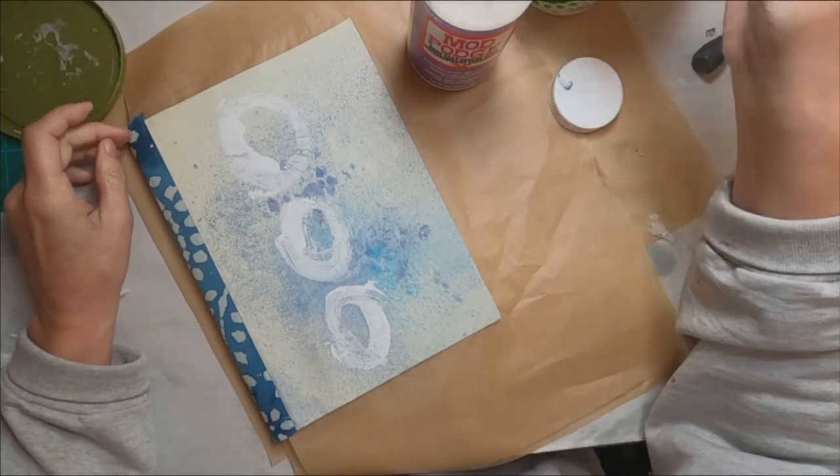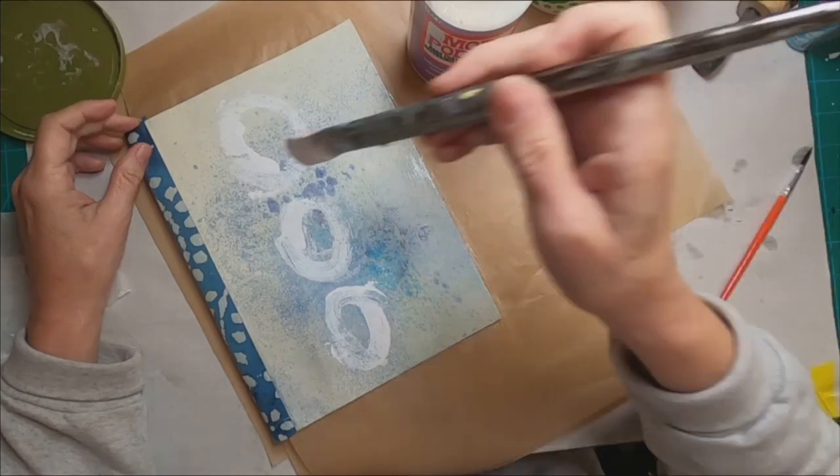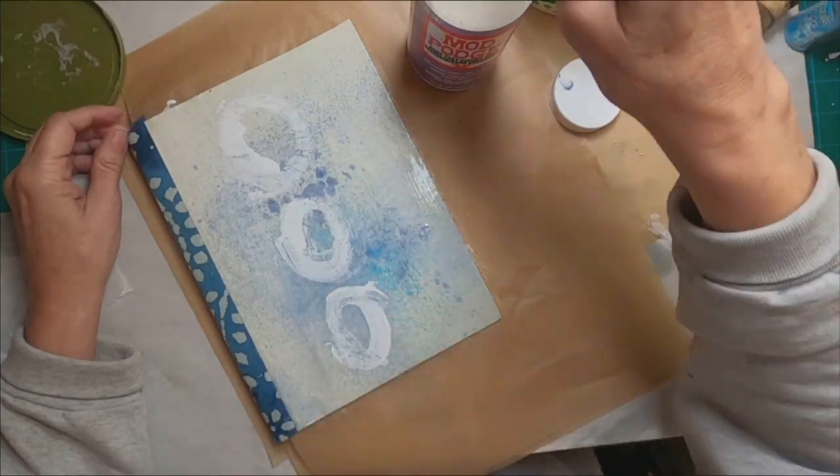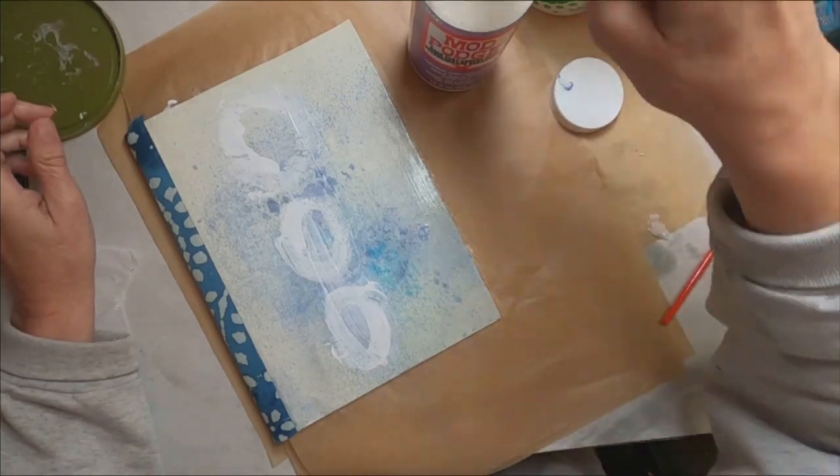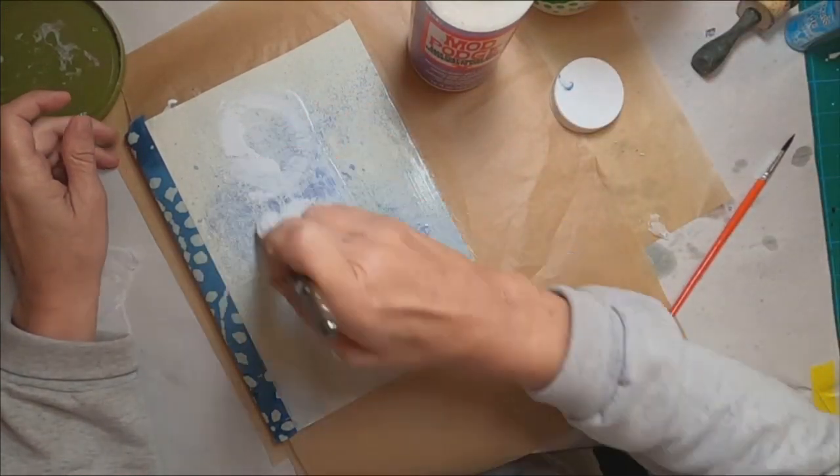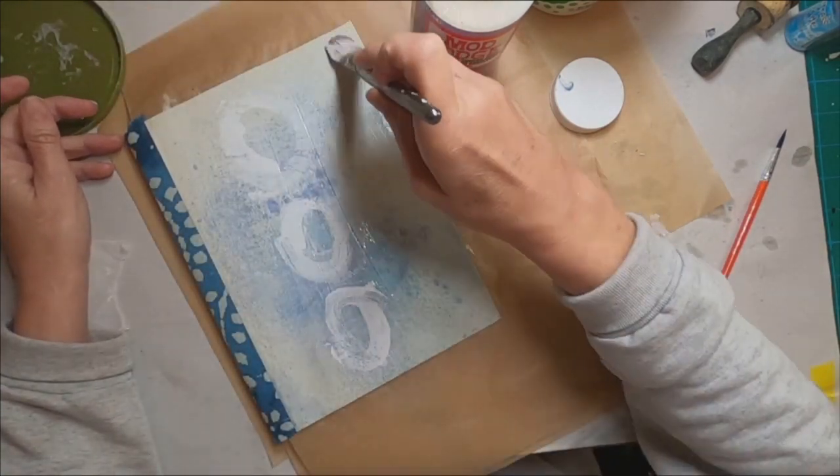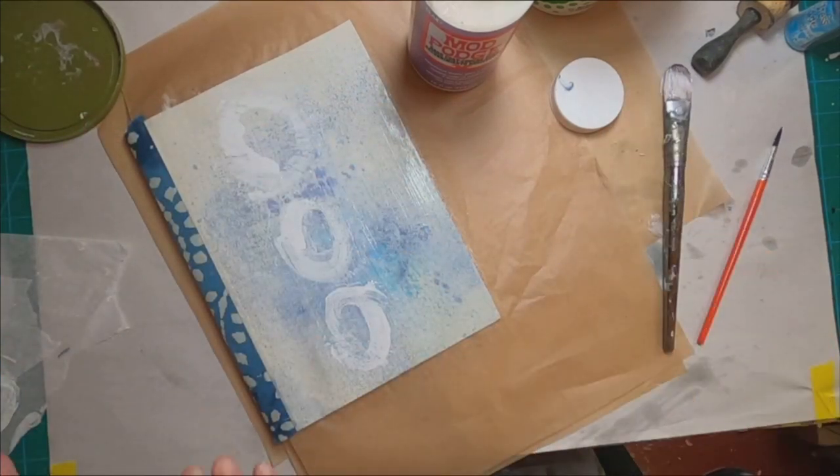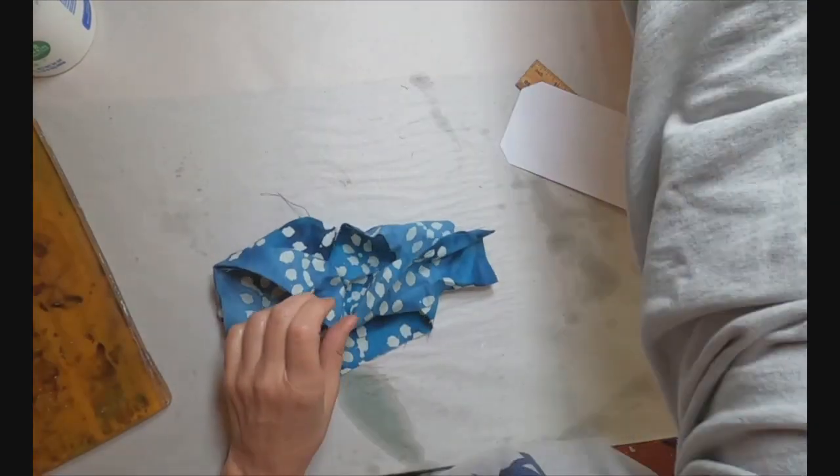So that needs to dry. I'm going to allow that to dry. There was some dry time in there that you didn't see. But once all of those circles were dried onto the front cover of this booklet, I pulled out the Mod Podge hard coat. I'm going to give the front cover a coat with that. I will set that aside and allow that to set up and dry. Then I'll flip it over and do the same thing on the back. So while that's drying, I want to create my closure.